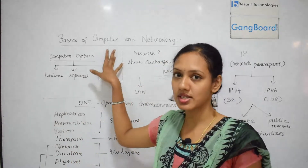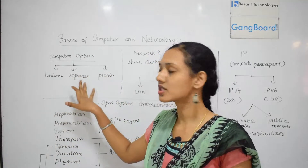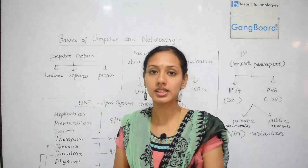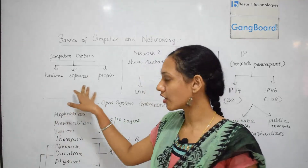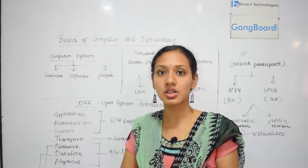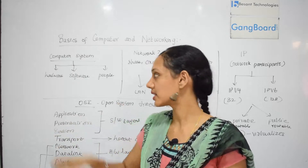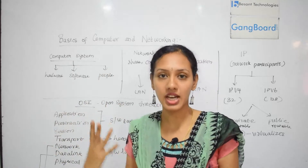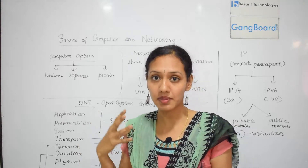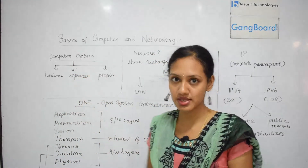Let's see what is a computer system. A computer system is made up of three parts: hardware, software, and people. Hardware is the physical component that makes up a computer. Software is the set of instructions used to communicate with the hardware. The third most important part is the people — they combine the work of hardware and software to use it for a particular purpose. So, people are the most important part of the computer system.